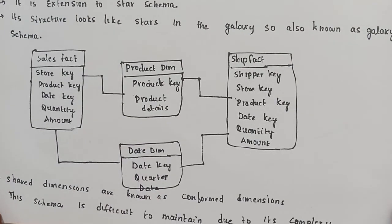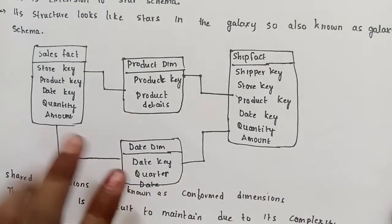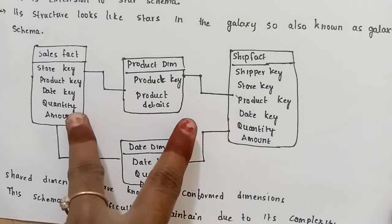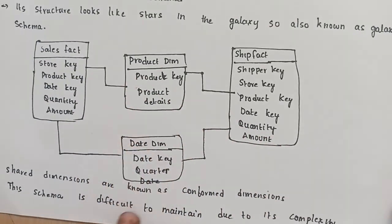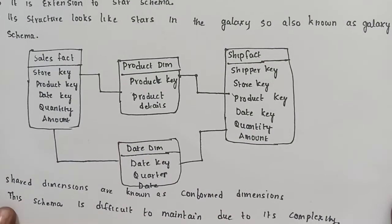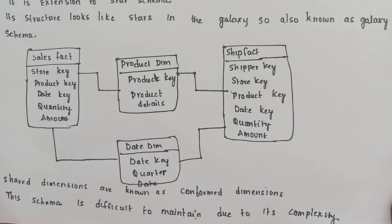The shared dimensions are known as conformed dimensions. This schema is difficult to maintain due to its complexity.